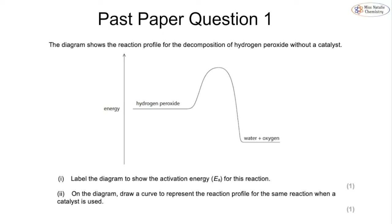The diagram shows a reaction profile for the decomposition of hydrogen peroxide without a catalyst. Part one asks you to label the activation energy EA. We draw a dotted line extending from our reactants, and the activation energy is labeled from the bottom of this dotted line up to the top of the curve, labeled EA.